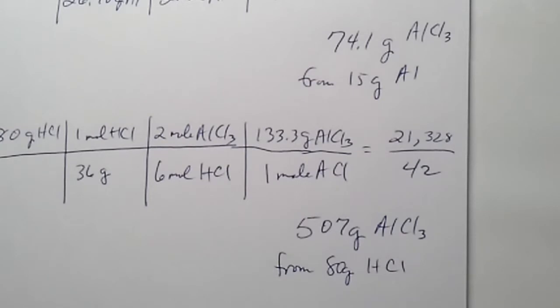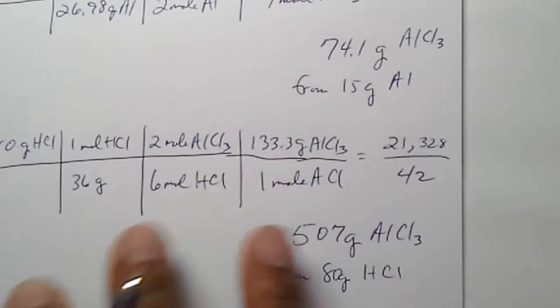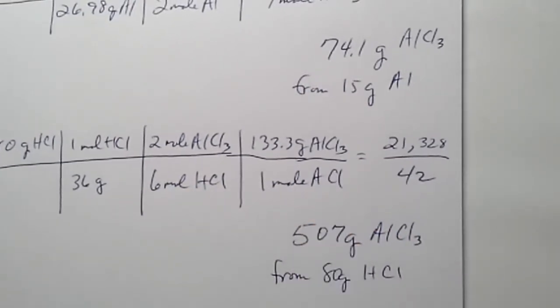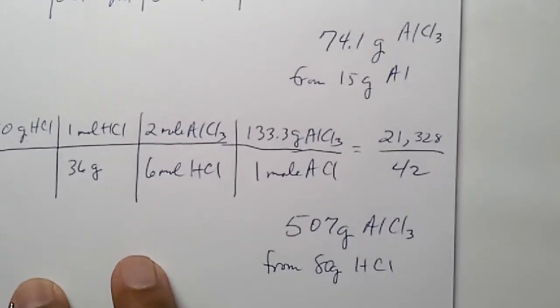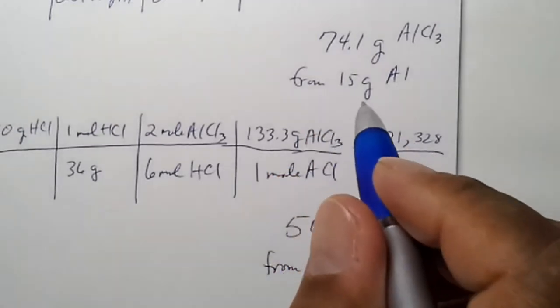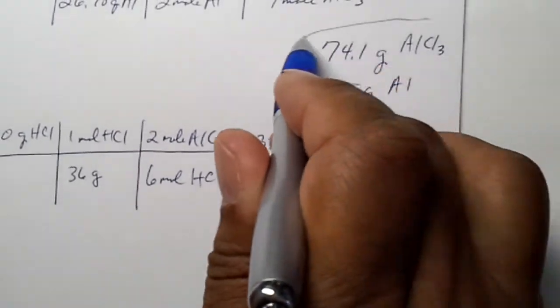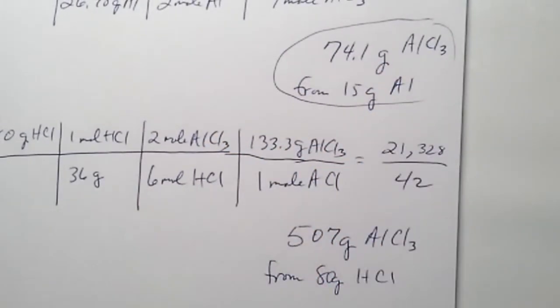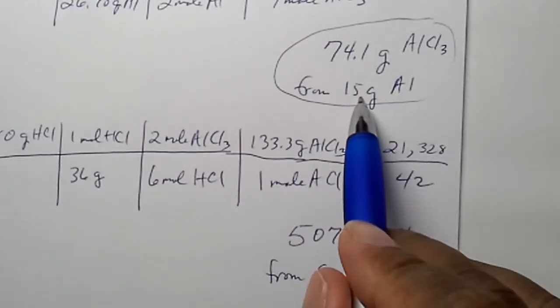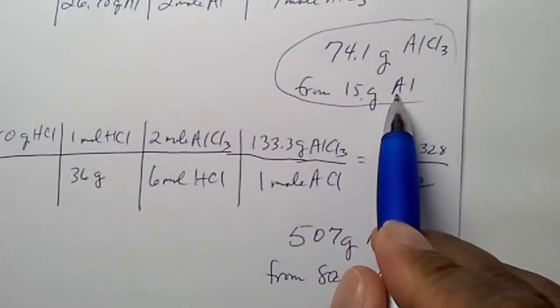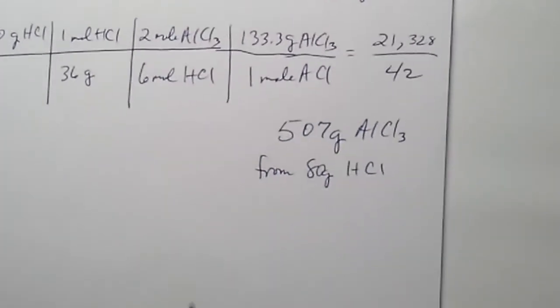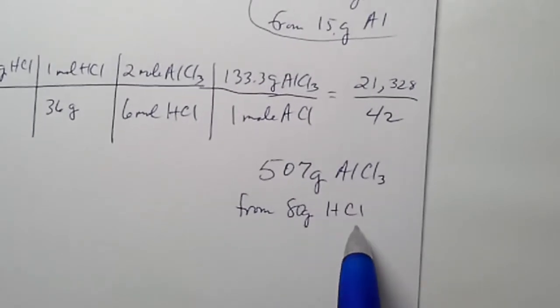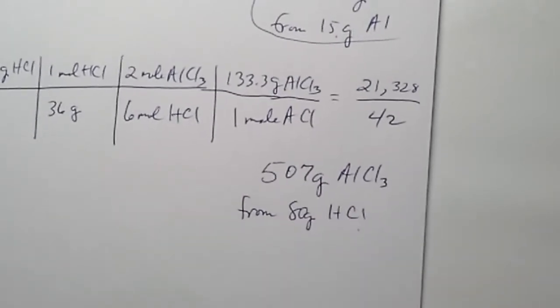Okay. So, how much aluminum chloride can we make? Well, it looks to me like we can only make seventy-four point one given the fact that we have fifteen grams completely reacting of aluminum. But if we had completely reacted our hydrochloric acid, we would have five hundred and seven grams.